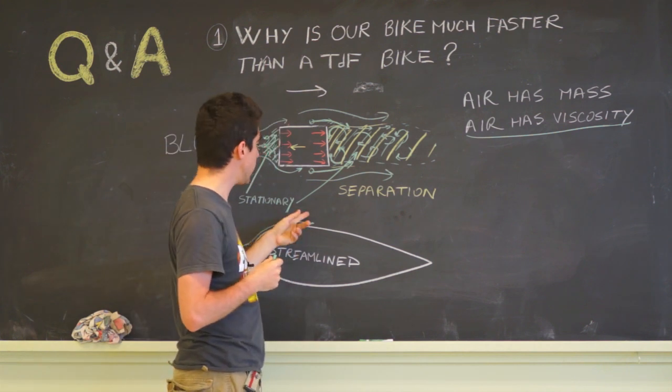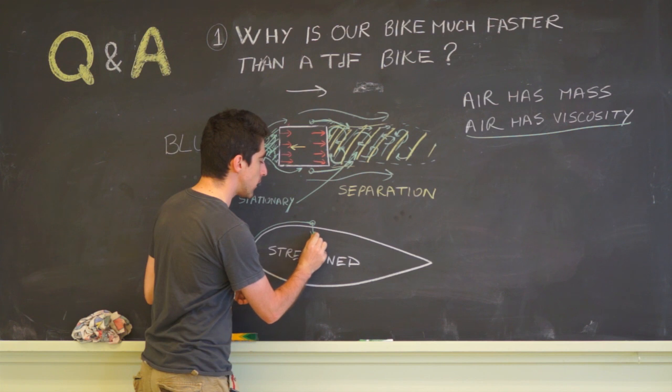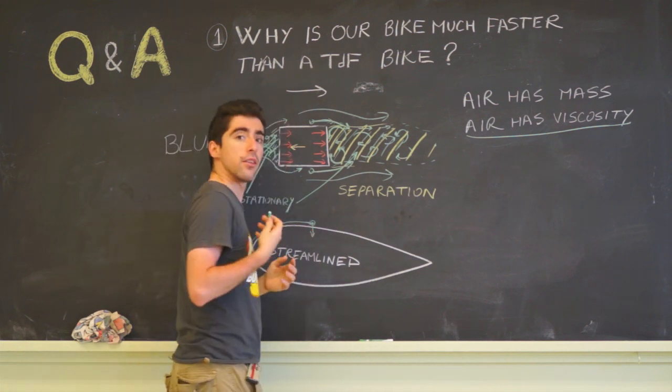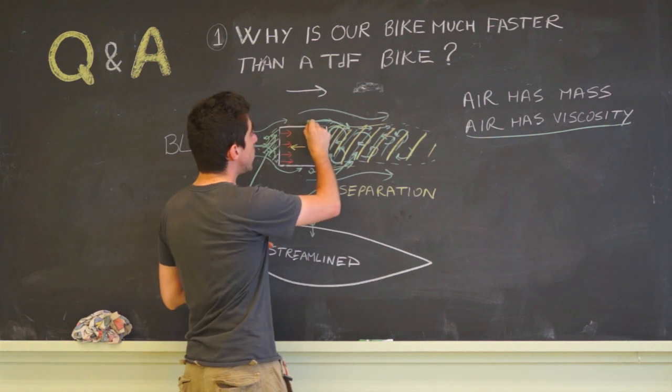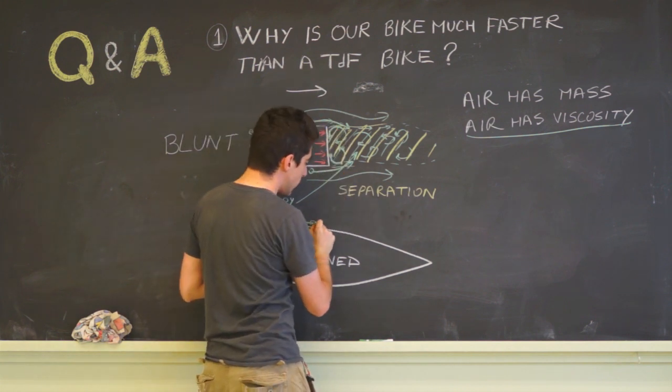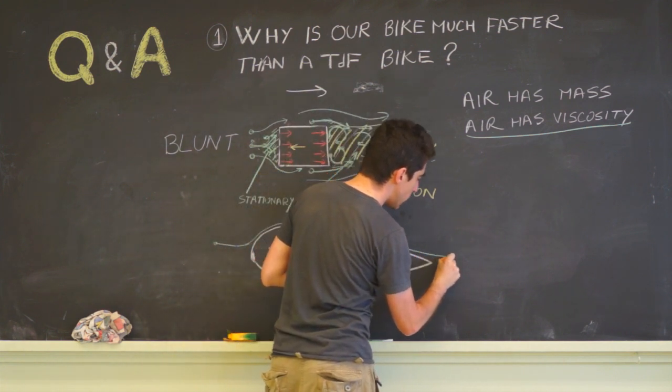Now what happens here is this particle of air is gradually accelerated towards the object. The acceleration is a lot more gradual than what would happen at this sharp corner, and the particle is able to follow the object most of the way.